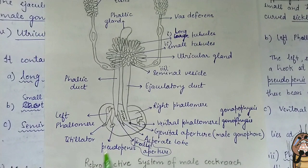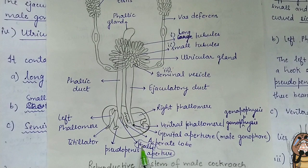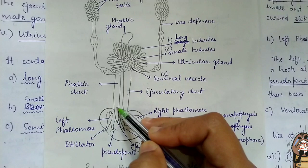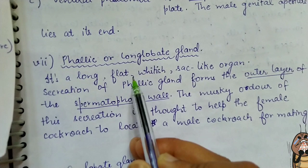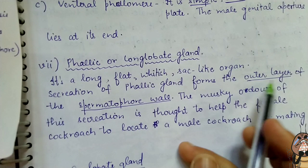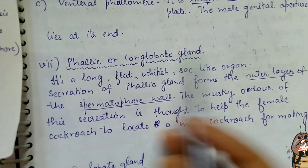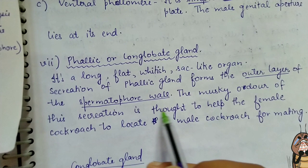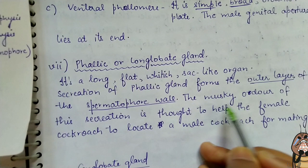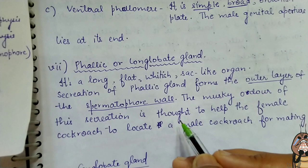The phallic gland is also called the conglobate gland. It is a long, flat, whitish, sac-like organ. The secretion of the phallic gland helps in the formation of the outer layer of the spermatophore wall. The musky odour of the secretion is thought to help the female cockroach to locate the male cockroach for mating.